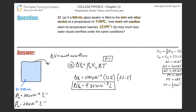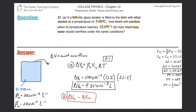Now for letter B: how much less water would overflow under the same conditions? Instead of ethyl alcohol, the beaker is now filled with water. What they're asking is for the difference between the change in volume of alcohol — the amount that overflows for alcohol — minus the change in volume if that beaker were filled with water. This difference represents how much less water would overflow.